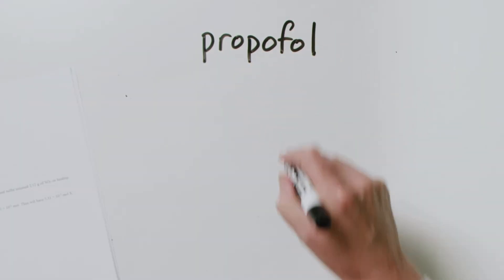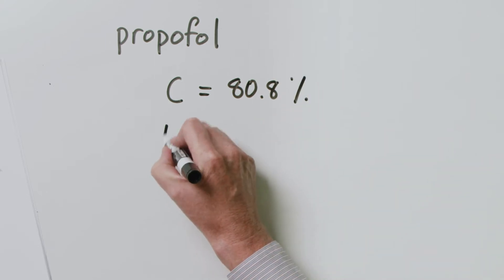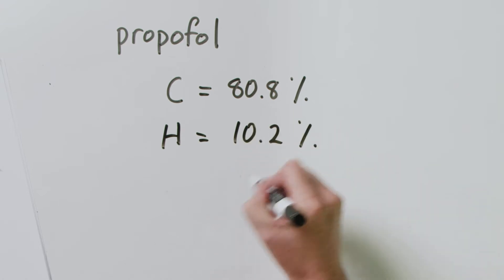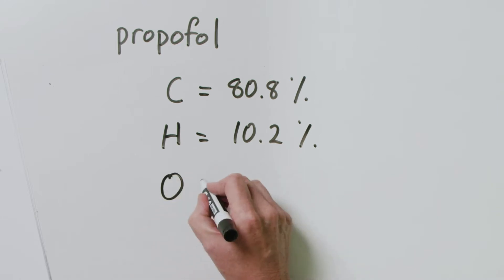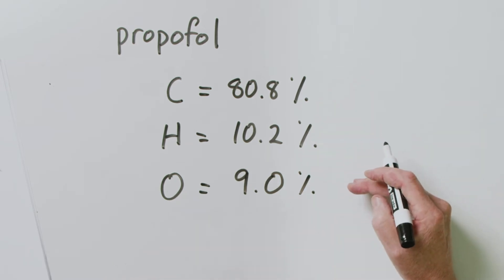So we're going to have a look at a compound called Propofol. It's not a chemical name, it's a trade name. This is a sedative, used to calm you down when you're having internal operations and things like that, so you'll find this in medicine. And we want to know what the empirical formula of this particular compound is. What people very probably did was to take this, combust it in an atmosphere of oxygen, and from that they found that propofol is made up of 80.8 mass percent of carbon, 10.2 mass percent of hydrogen, and the remainder — 9 mass percent — was oxygen.